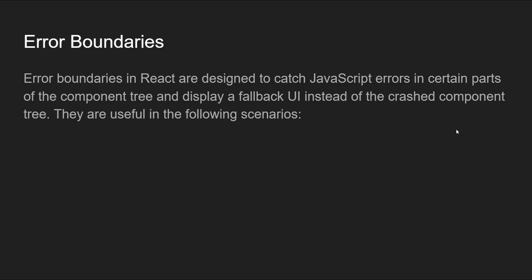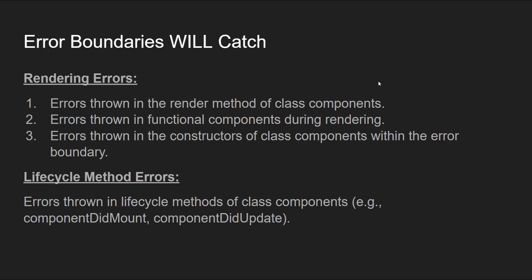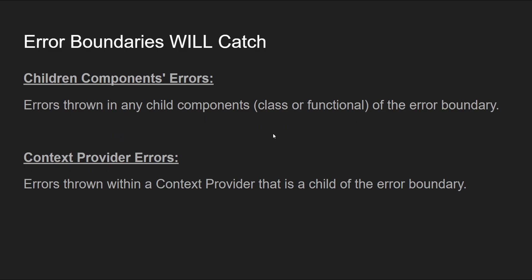Now let's talk about error boundaries and custom error handling hooks, and where each one makes more sense. Error boundaries are designed to catch errors in certain parts of a component tree and display a fallback UI instead of the crashed component tree. The scenarios where they are useful — and where they will absolutely catch errors — are rendering errors, lifecycle method errors, errors thrown in child components, and context provider errors.